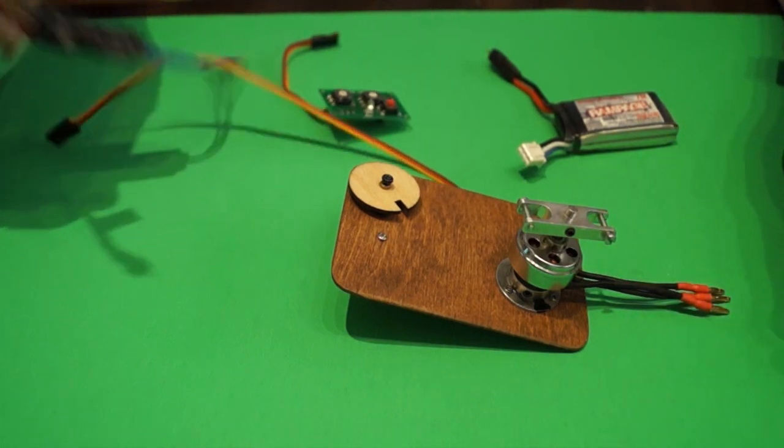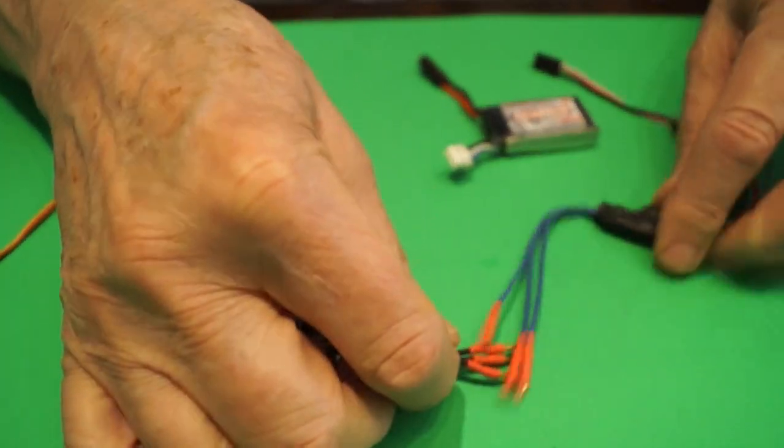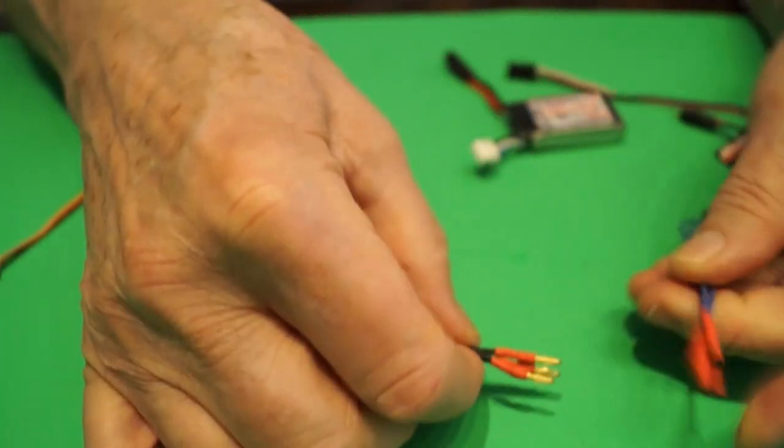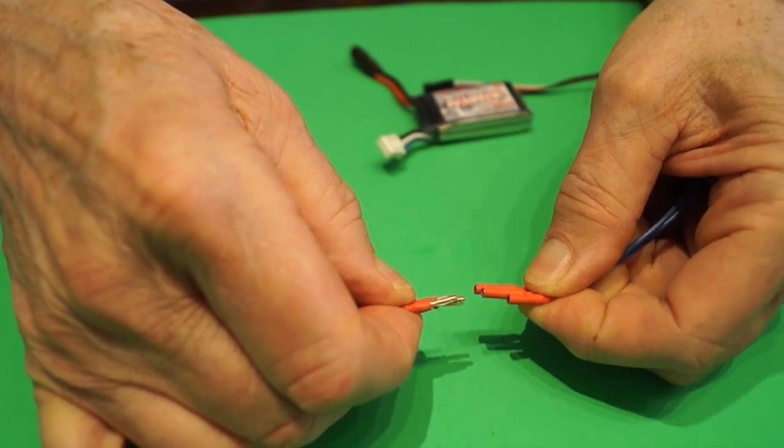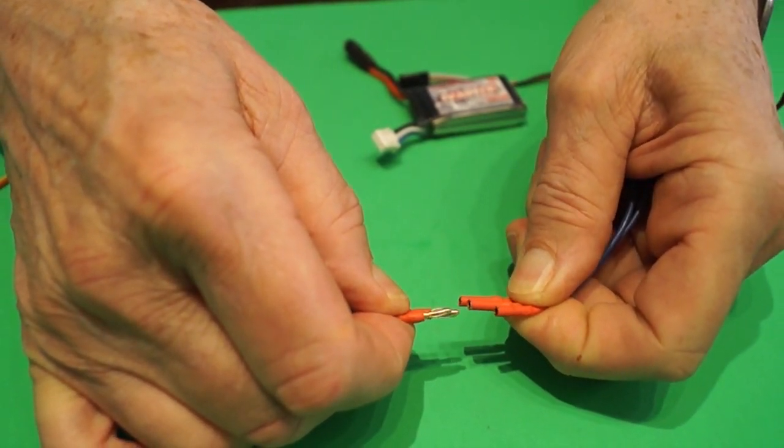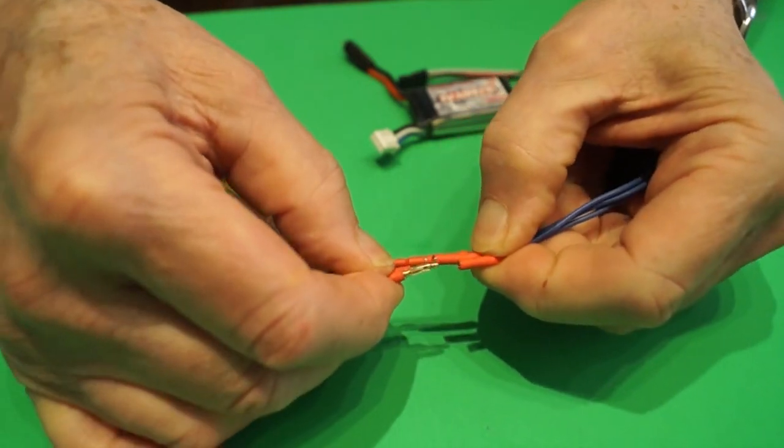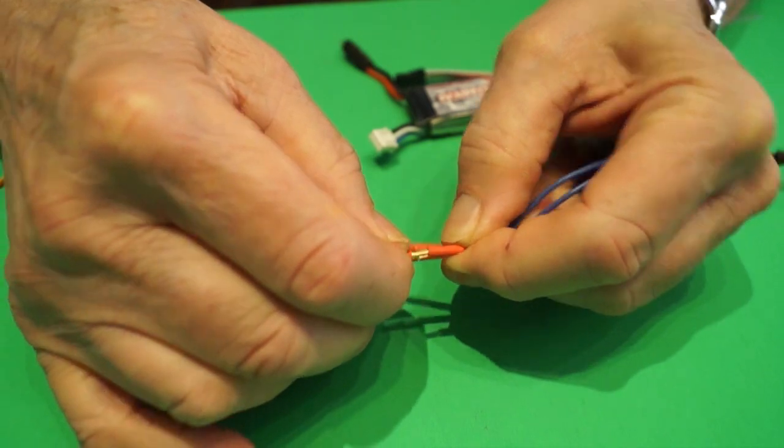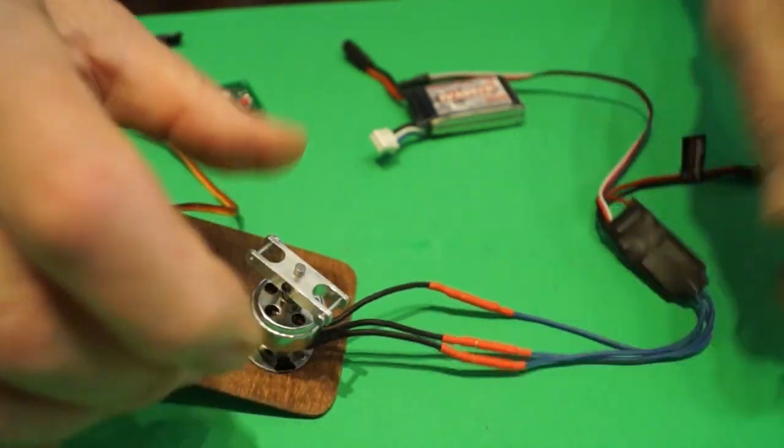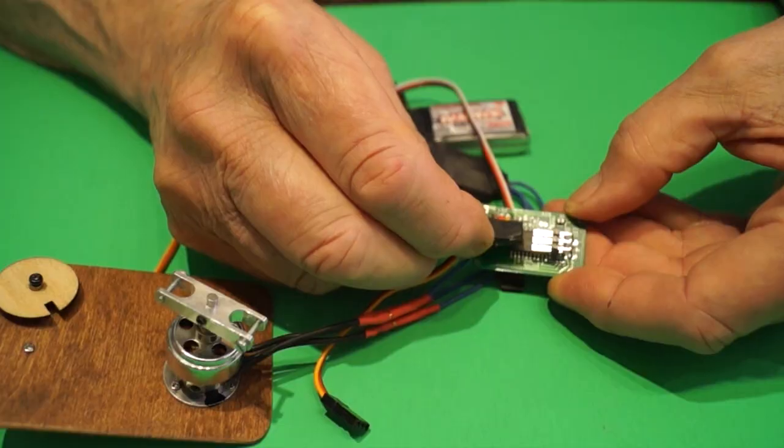Let's connect up the ESC to the motor. Now, I got three wires, three connectors. Uh-oh! What goes where? I have no idea. We're not going to know which goes where until we try it. So I'm just going to plug any three wires into any three connectors. All right? Now the ESC is connected to the motor.